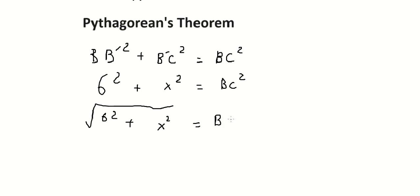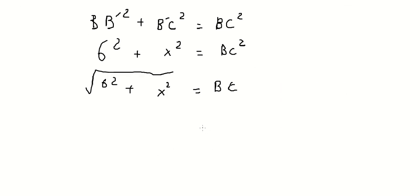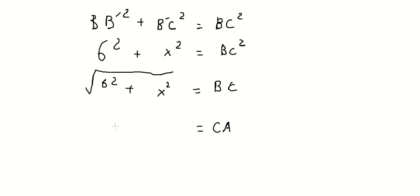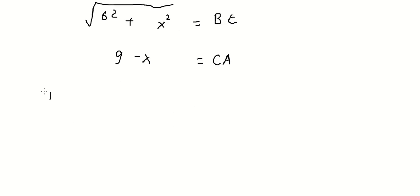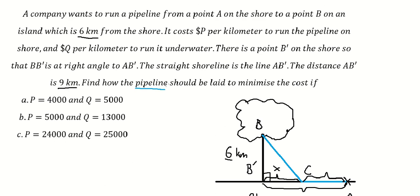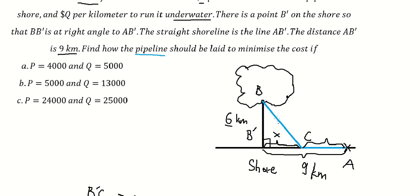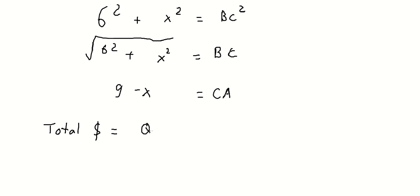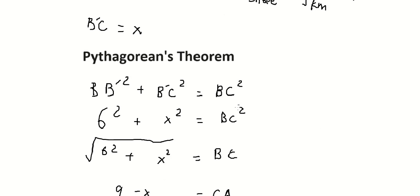So BC equals the square root of 36 plus x squared, and CA equals 9 minus x. Now we set up the total cost function based on price. On the shore, the price is B, and under the water the cost rate is C (cube). So BC is multiplied by the underwater rate, and CA is multiplied by the shore rate.